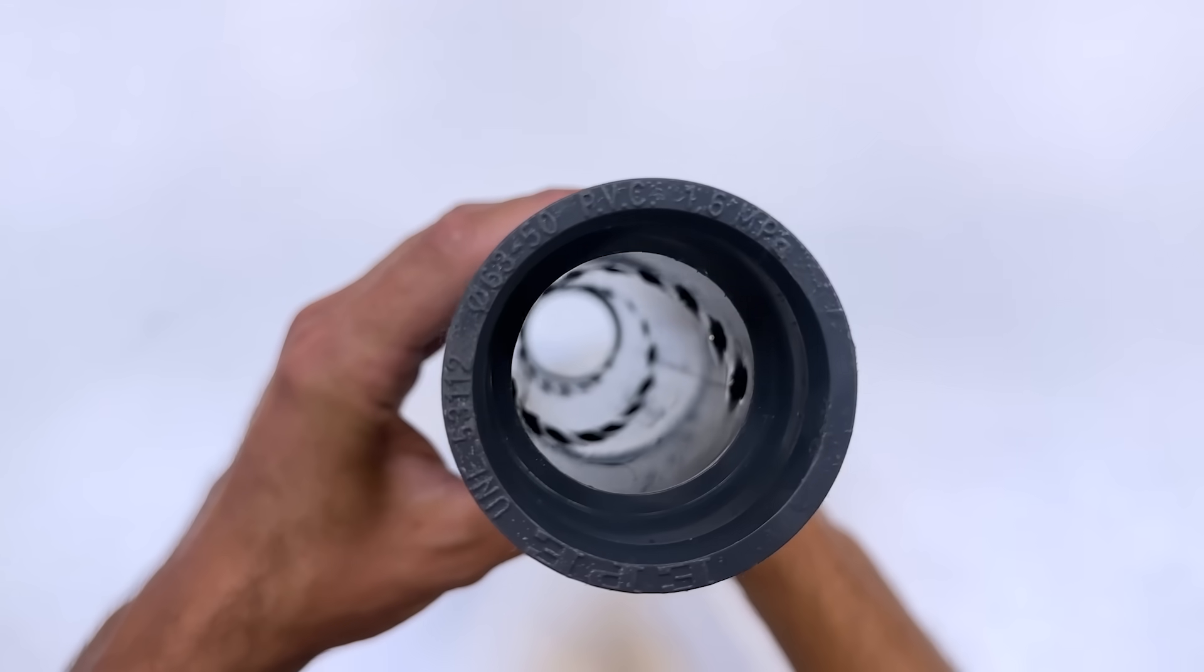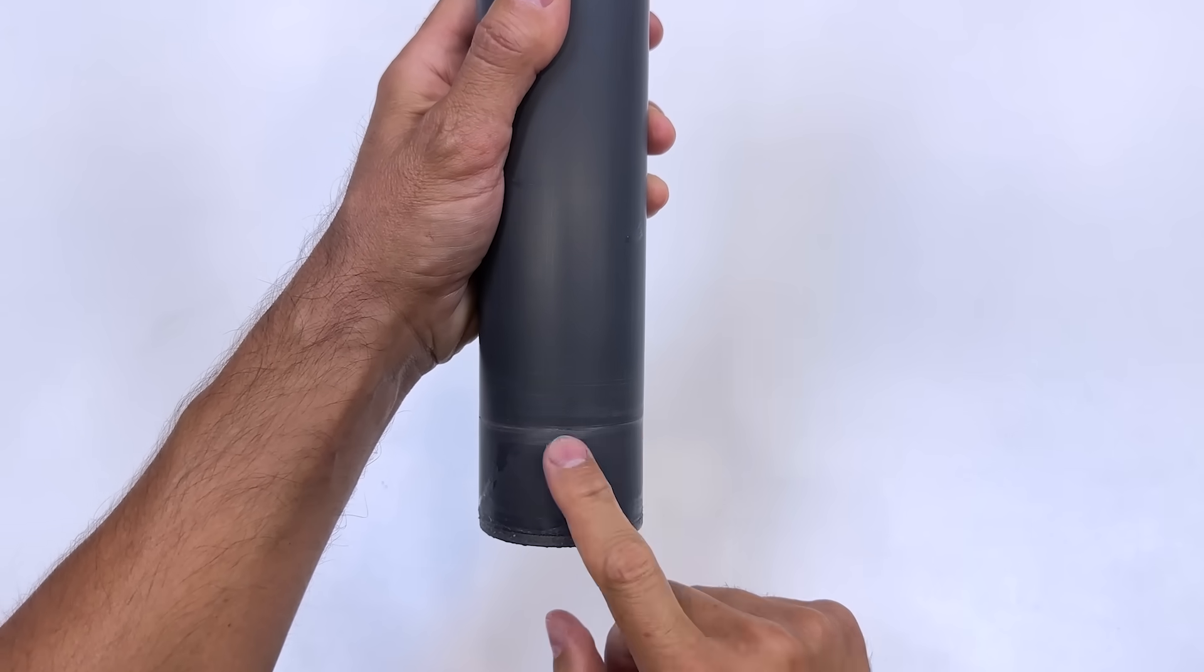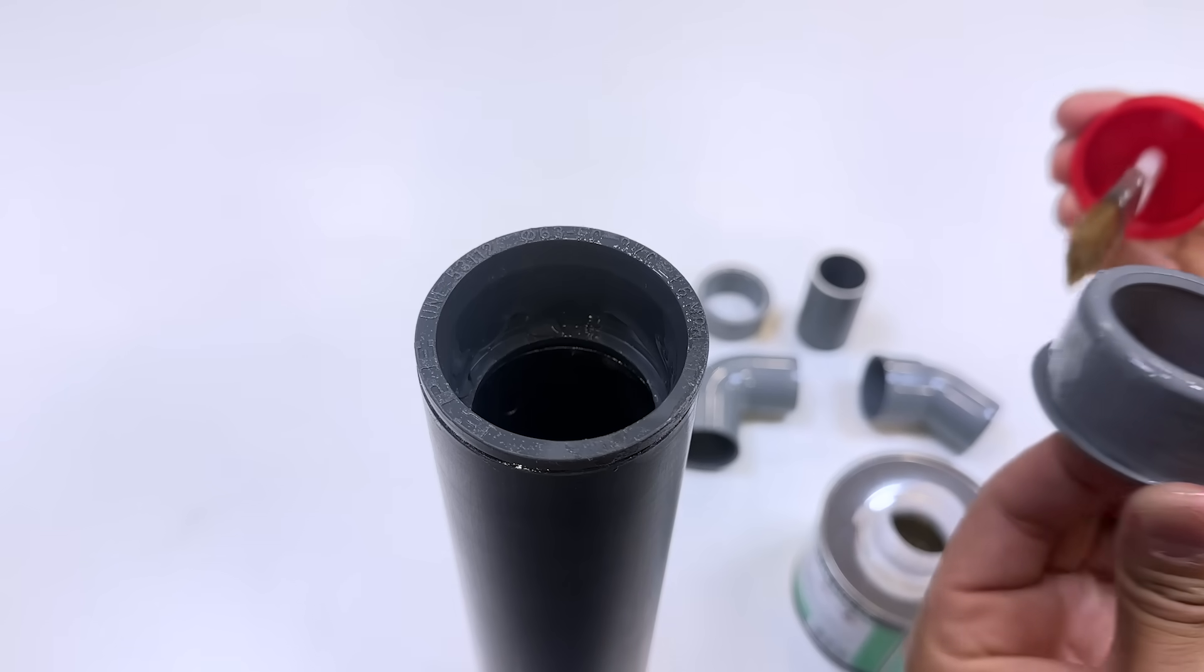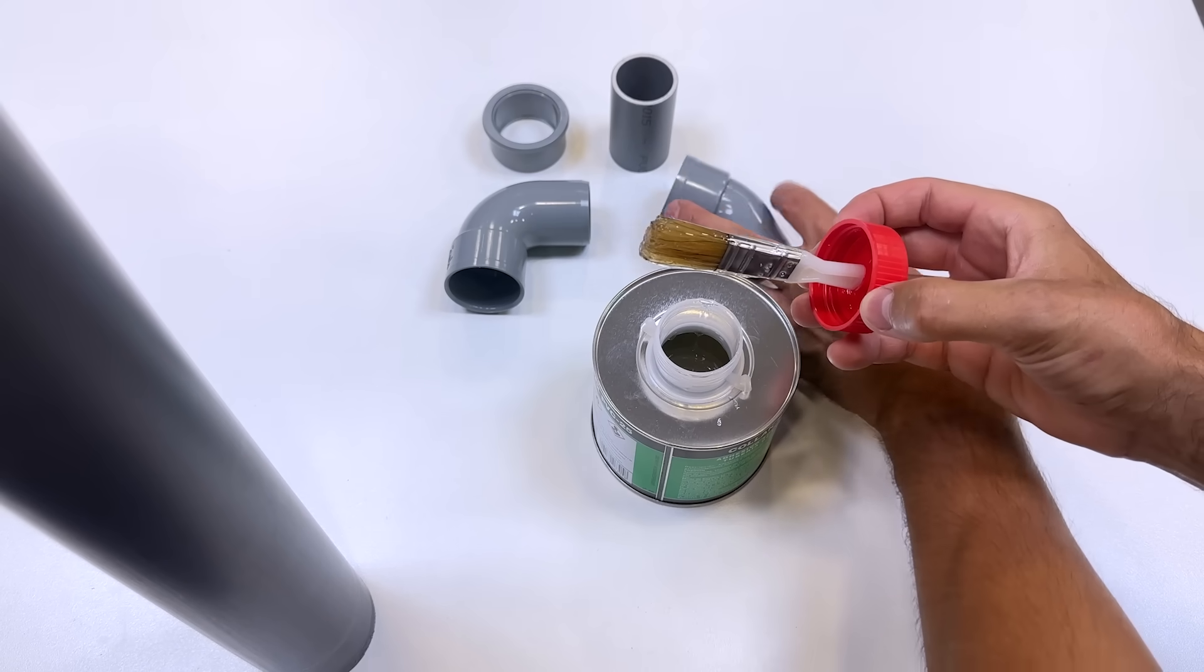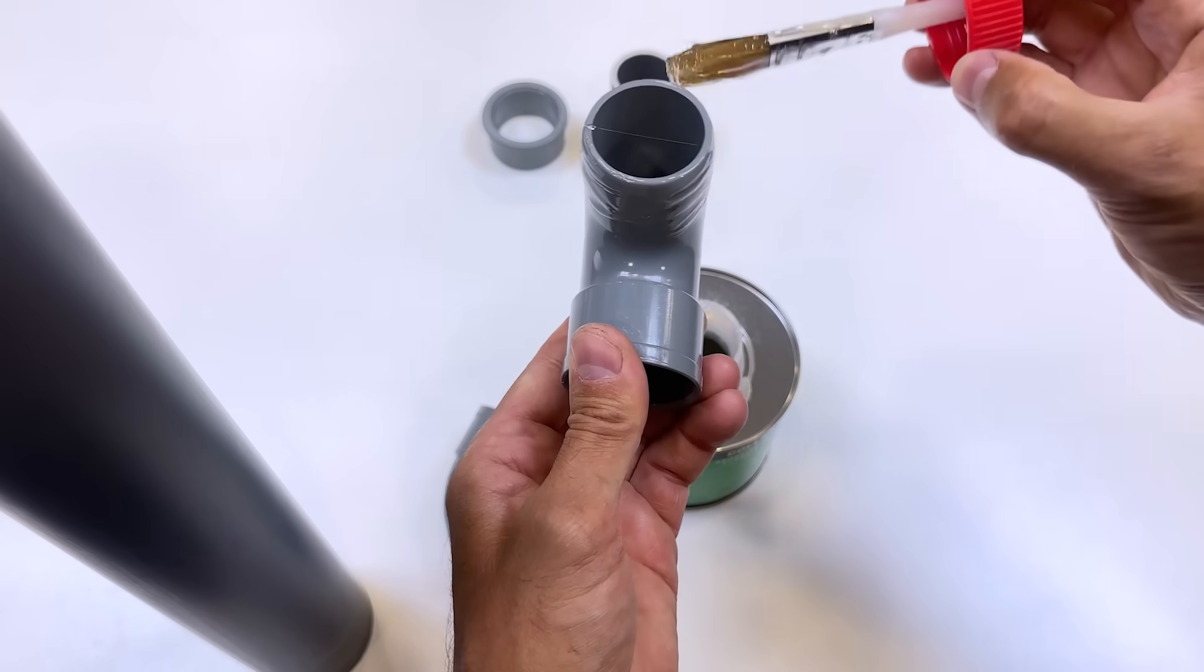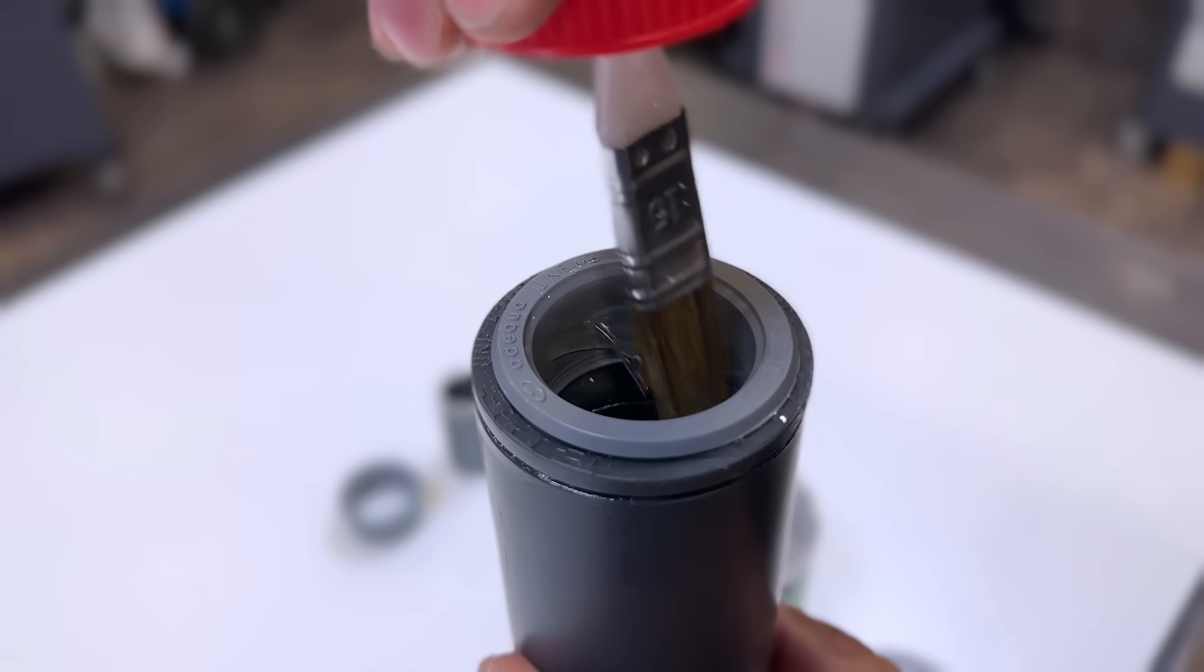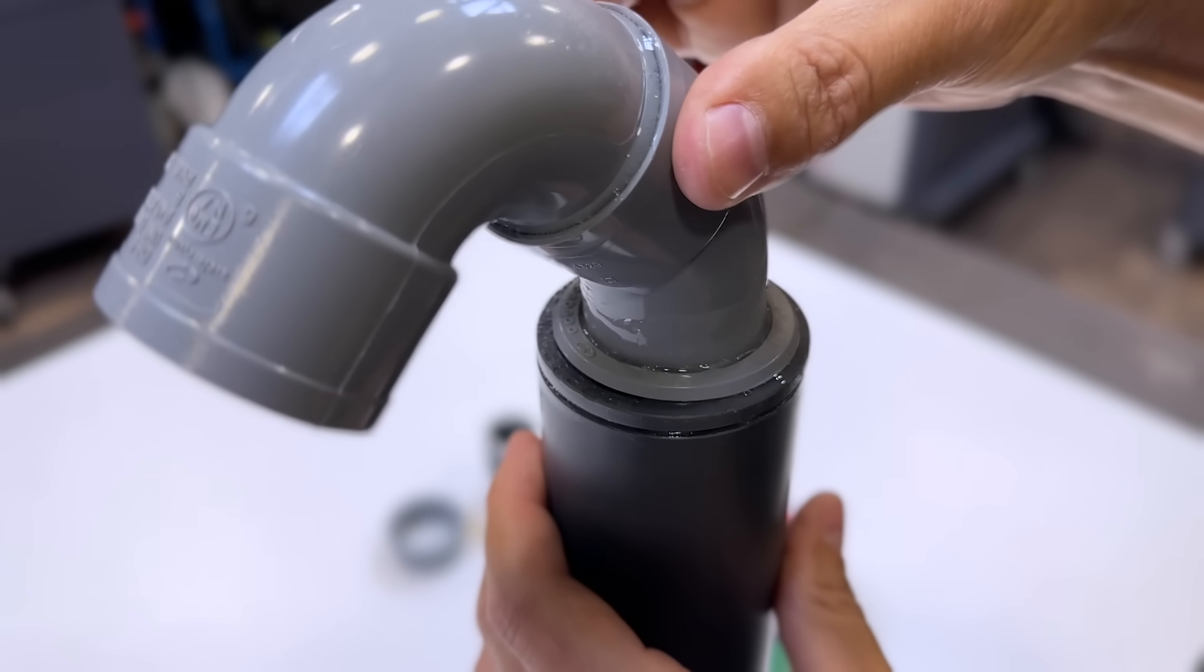This is how it will look. Now we glue this 50 to 40 millimeter diameter reduction. We continue by gluing this 45 degree elbow 40 millimeters in diameter along with this 90 degree elbow. We assemble this assembly to the previous pipe. This will serve as the water inlet from the outside.